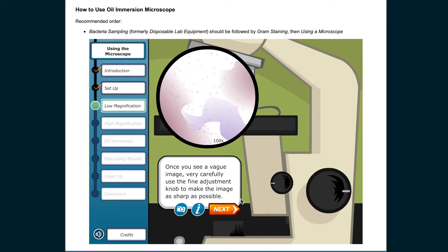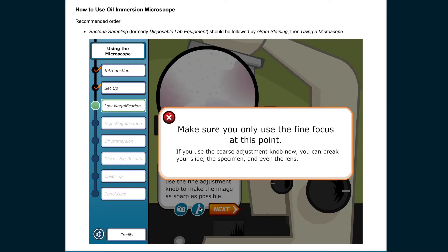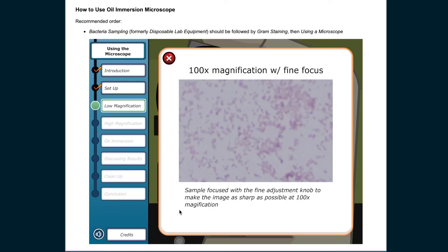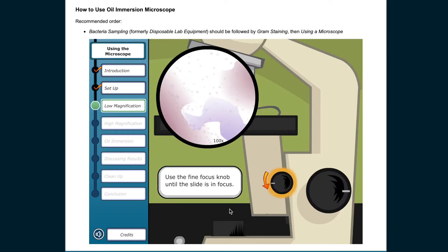Once you see a vague image, very carefully use the fine adjustment knob to make the image as sharp as possible. Make sure you only use the fine focus at this point. If you use the coarse adjustment knob now, you can break your slide, the specimen, and even the lens. Use the fine focus knob until the slide is in focus.